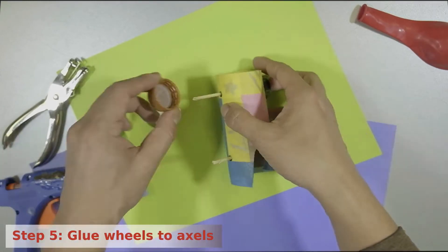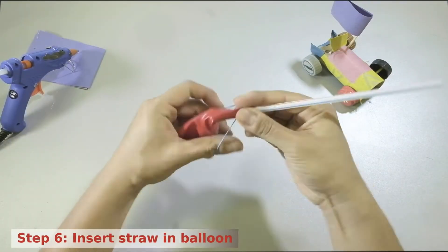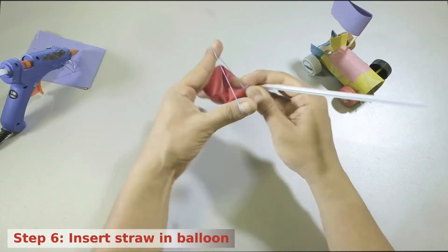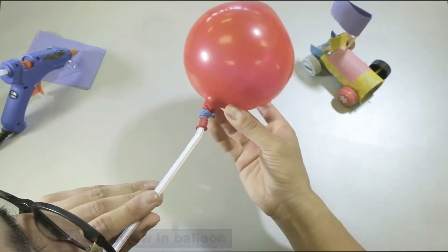Using hot glue, attach a bottle cap wheel to each end of both axles. Then insert the bendable end of the straw about one-half inch inside the balloon. Be sure to wrap the balloon tightly around the straw and then tape it in place.